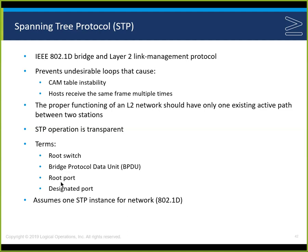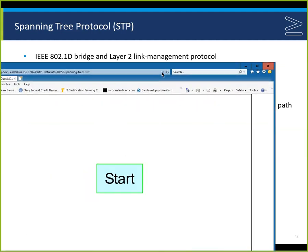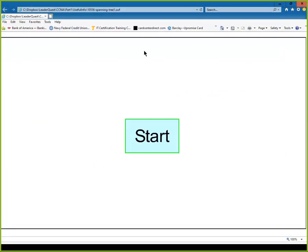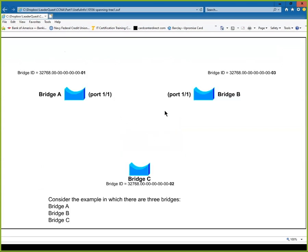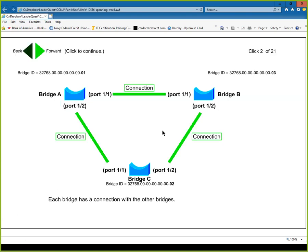Looking at the simulator for terminology: we have bridges connected in a triangle, and each has a bridge ID — a priority, which by default is 32768 — appended to the MAC address. We're using simple MAC addresses 1, 2, and 3. In switches, the lowest typically wins the election. We're going to elect a root bridge.